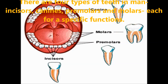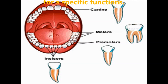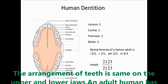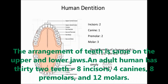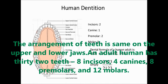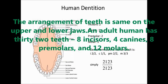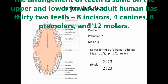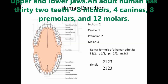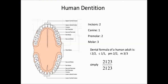Each type of teeth has a special function. The arrangement of teeth is the same on the upper and lower jaws. An adult human has 32 teeth, divided into 8 incisors, 4 canines, 8 premolars and 12 molars.